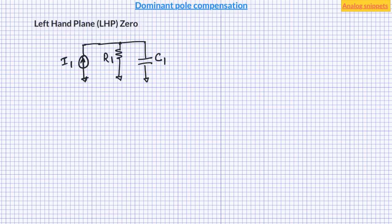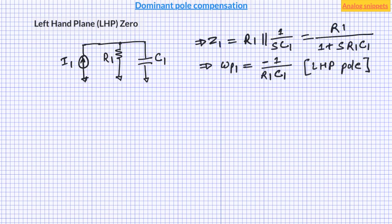Let's consider a parallel RC circuit driven by an ideal current source. This is quite similar to the model of the first and second stage of our amplifier. Since this circuit contains just one capacitor, it is a first-order system with one pole. In dominant pole compensation, in order to reduce the frequency of the pole, we increase capacitor C1, in general by connecting another capacitor in parallel with C1. Although it looks like it should now be a second-order system since there are now two capacitors, since these two capacitors are in parallel, there is only one big capacitor, so it is still a first-order system.